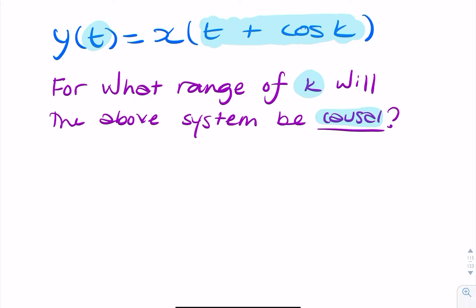So I can say, for causality, t plus cosine k must be less than or equal to t. So cosine k must be less than or equal to 0. So now we need to solve this inequality. When is cosine less than 0?